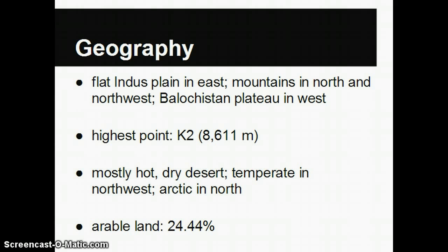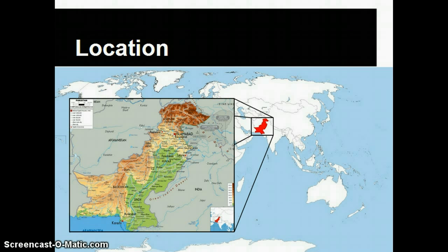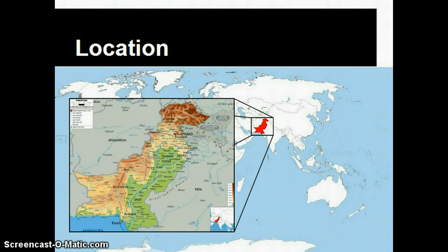About one-quarter of the land in Pakistan is arable. Almost all of that land is along the Indus River Valley — remember, that's the green area of the map, the eastern part of the country.